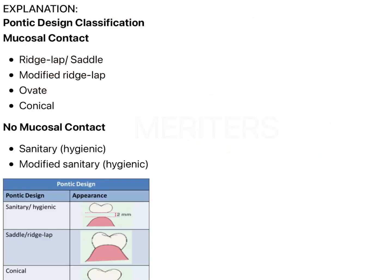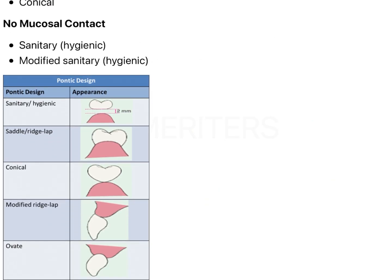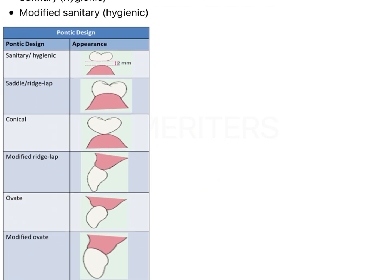Let's look at the image form of all of these. Sanitary pontic has no mucosal contact. Modified sanitary has the undersurface a little concave. Ridgelap has mucosal contact but is difficult to clean.